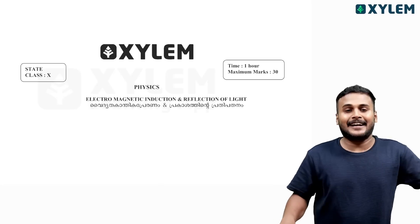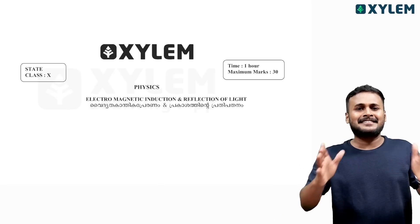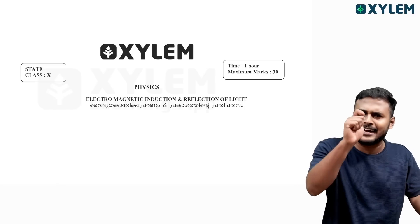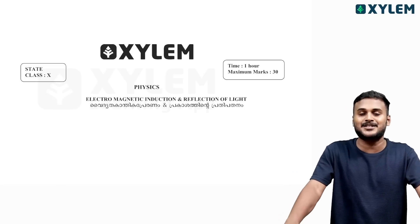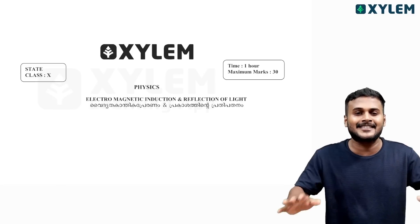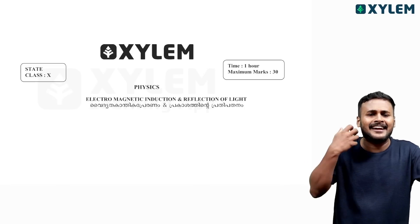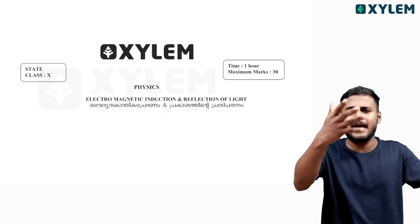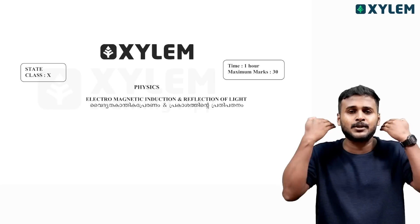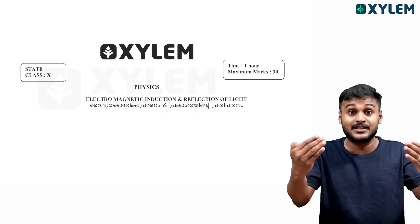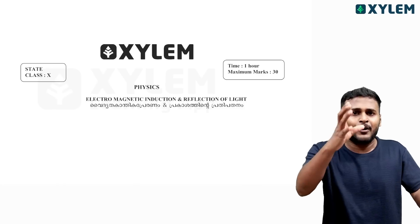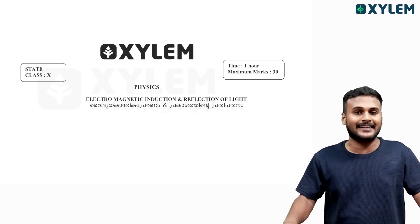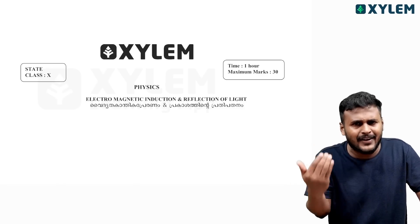Hi, welcome. So, these are our first two chapters: reflection of light and electromagnetic induction. We are learning this process. From these two chapters, we are going to ask questions on the question paper. A question paper pattern will be shown to you — how it will be fair to you.